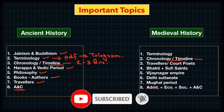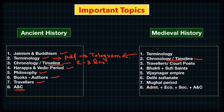For medieval history, you again need to cover terminologies — the PDF is available on Telegram — chronology timelines, travelers and court poets, and Bhakti and Sufi saints, as these questions have come more frequently recently. The three most important areas are the Vijayanagar Empire, Delhi Sultanate, and Mughal period. From these three empires, focus on administration, economy, society, and developments in art and culture.